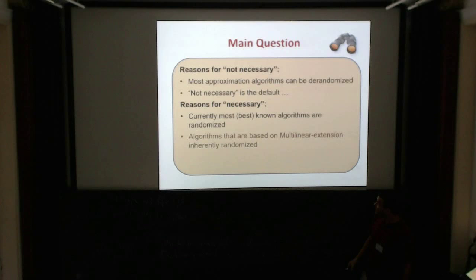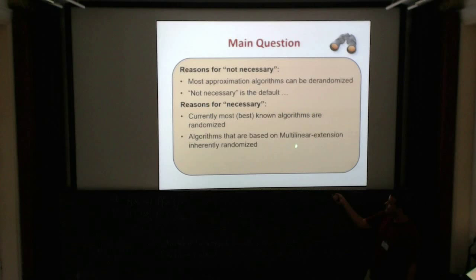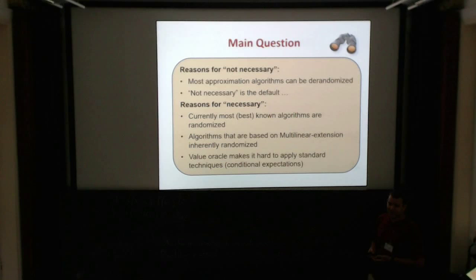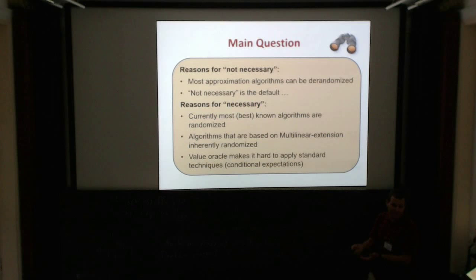Currently, most of the best-known algorithms for all settings of maximization are randomized, and no one knows how to derandomize them. Especially, algorithms like continuous greedy that are based on the multilinear extension are inherently randomized because they need to sample to get values and decide which direction to go. When we have value oracle — black-box access to the function — it makes it really hard to apply standard derandomization techniques like conditional expectations, because we don't see the function.